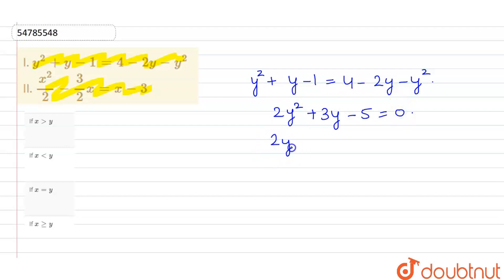If we factor, we have 2y² plus 3y minus 5 equals 0. So it will be (2y plus 5)(y minus 1) equals 0. The y values are minus 5/2 and 1.